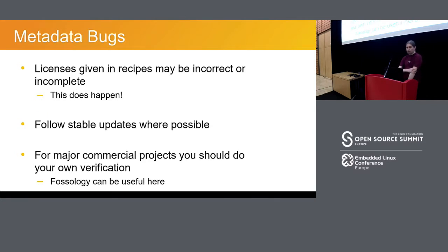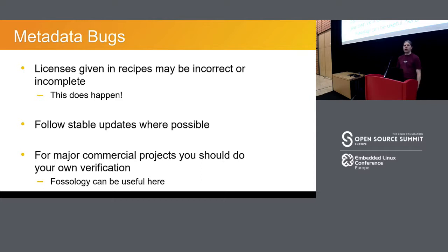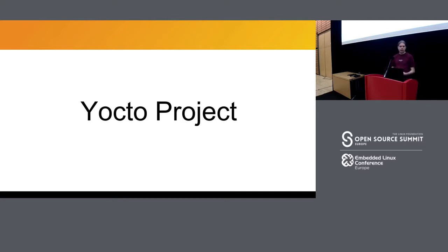The last thing in general advice is metadata bugs. License metadata bugs do happen — the license metadata is just a field in a recipe file that says this thing's under GPL version 2 or later, and sometimes that could be incorrect or incomplete. The best advice I have is follow stable updates. If you're using a particular version of Yocto project, we have stable release branches, and if we find incorrect license information that will get fixed in those stable branches. For major commercial projects, I would always recommend doing your own auditing — use something like Fossology.